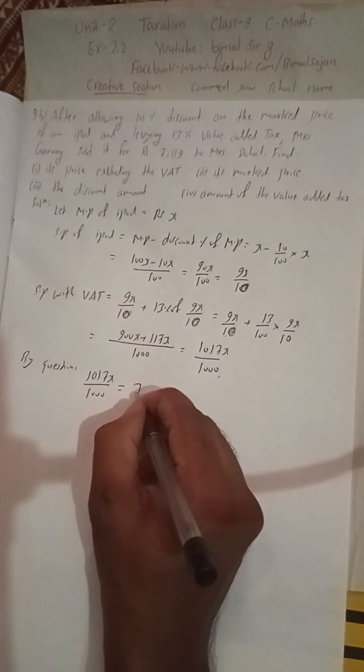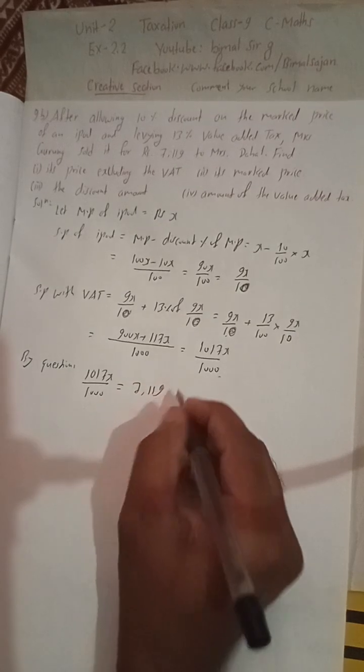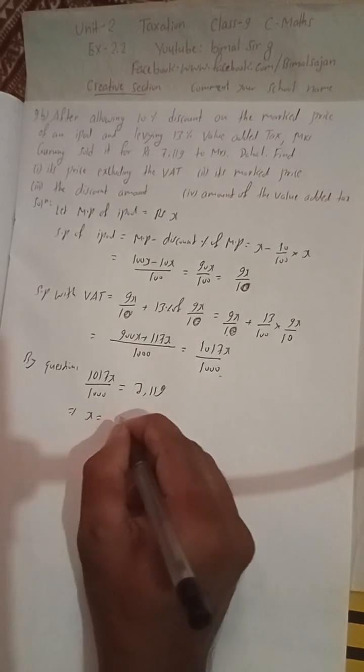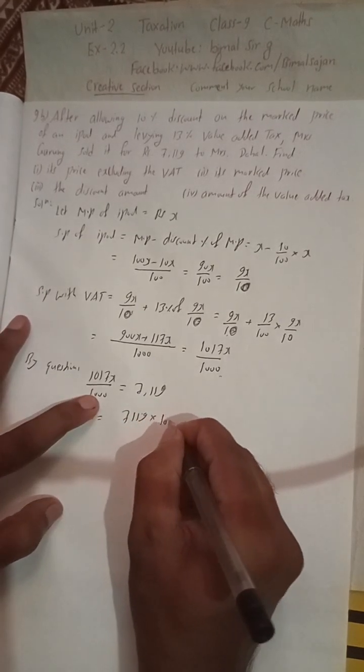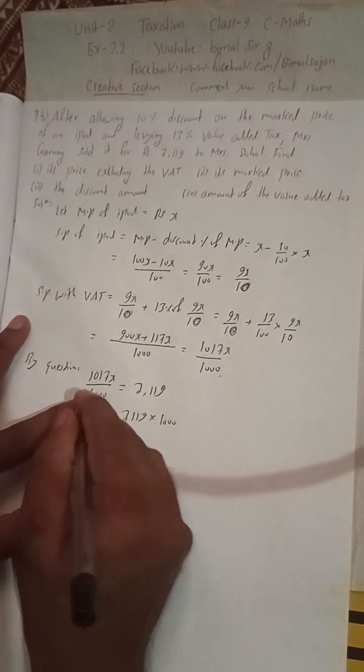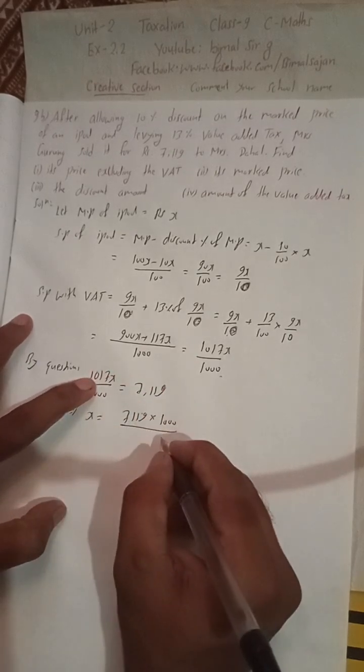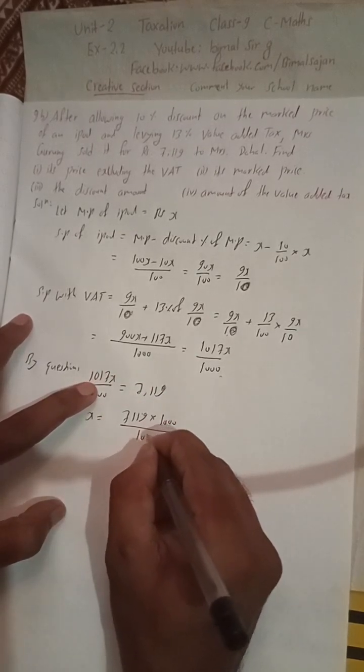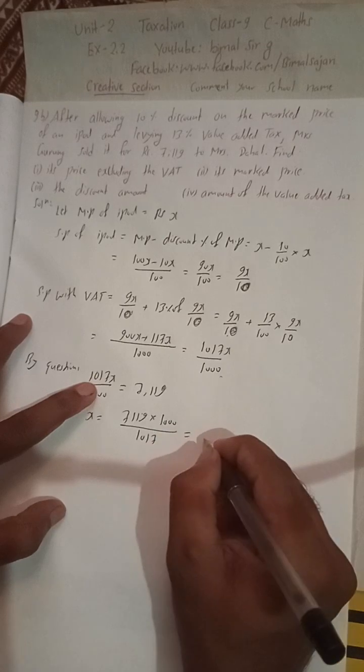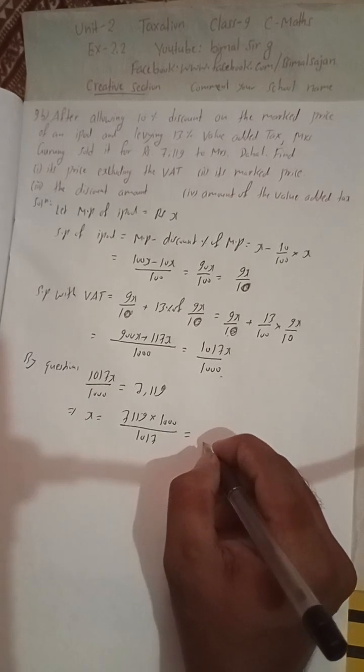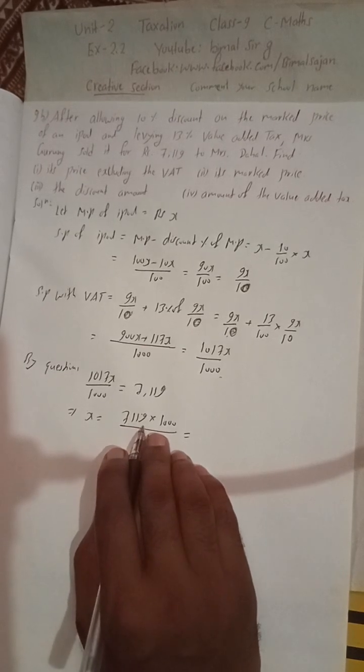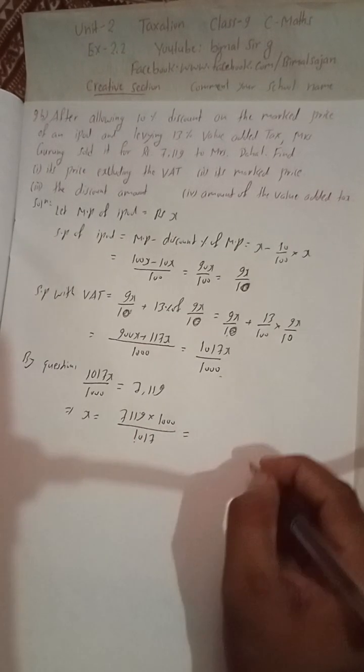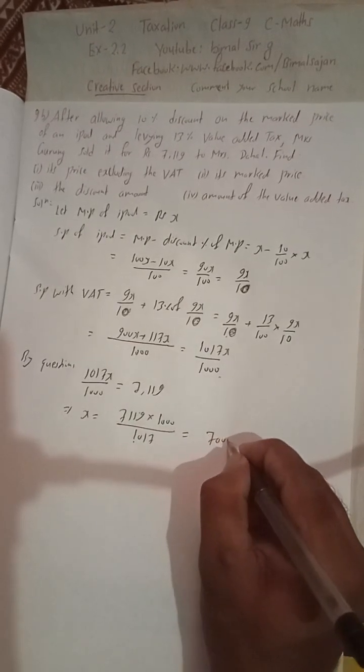This x equals 7119 times 1000 divided by 1017. When you cancel this, 7119 into 1000 divided by 1017, you will get 7000.